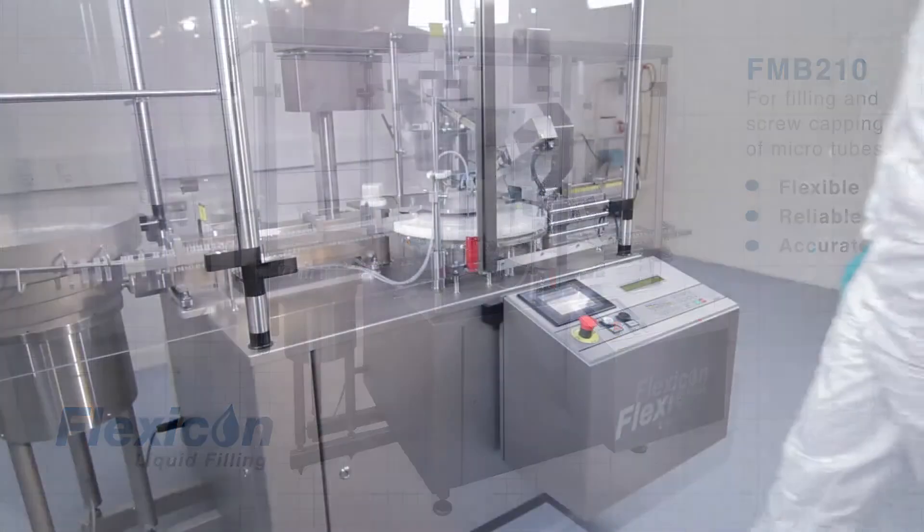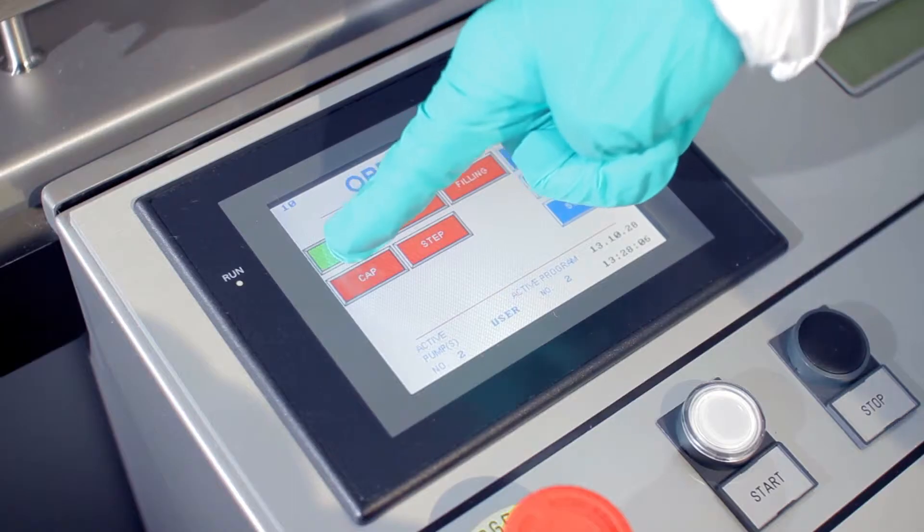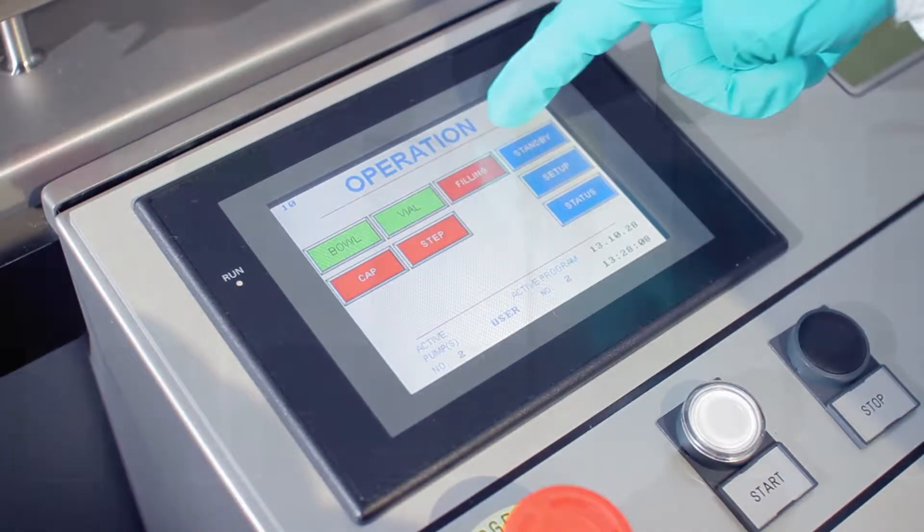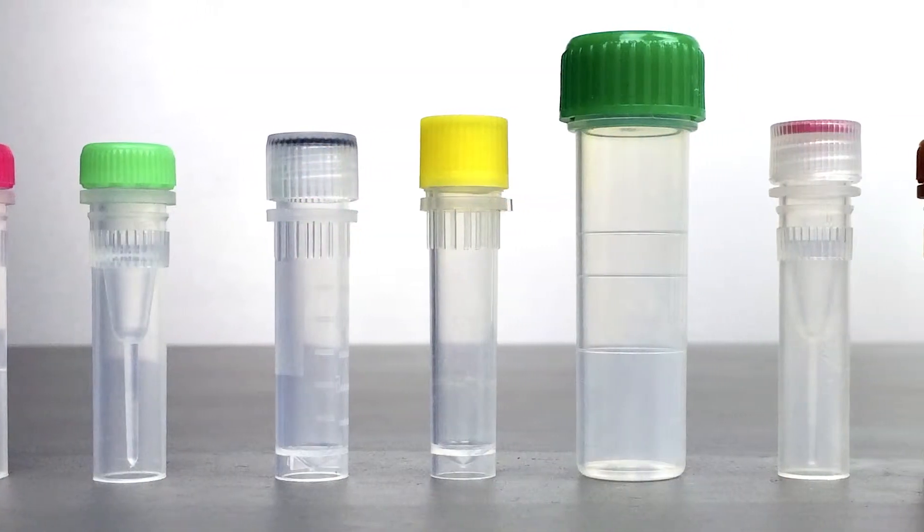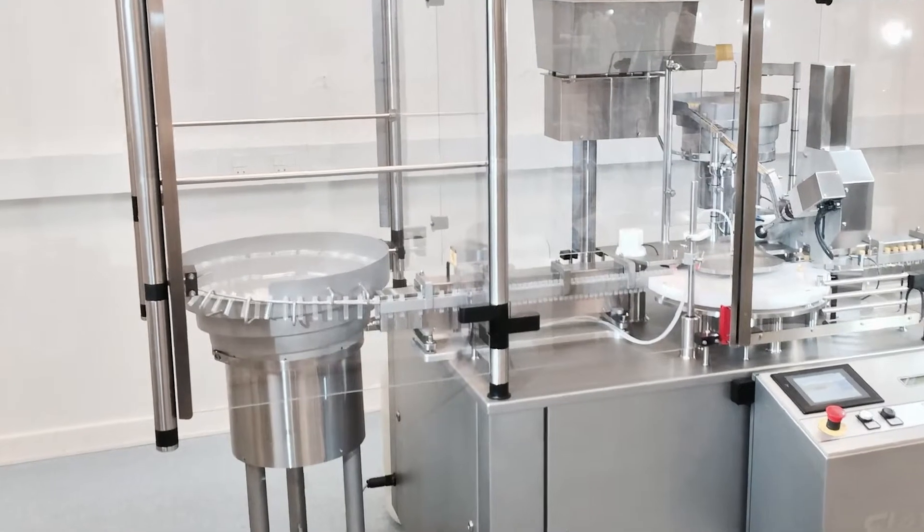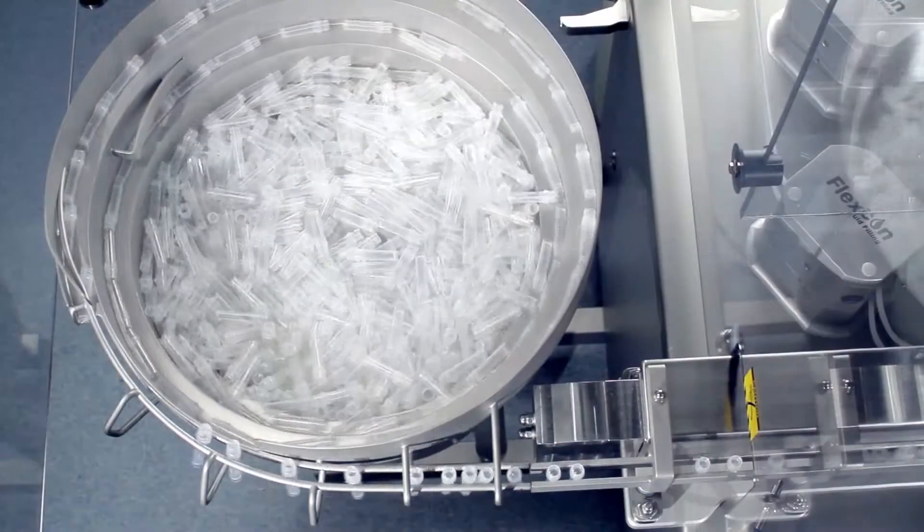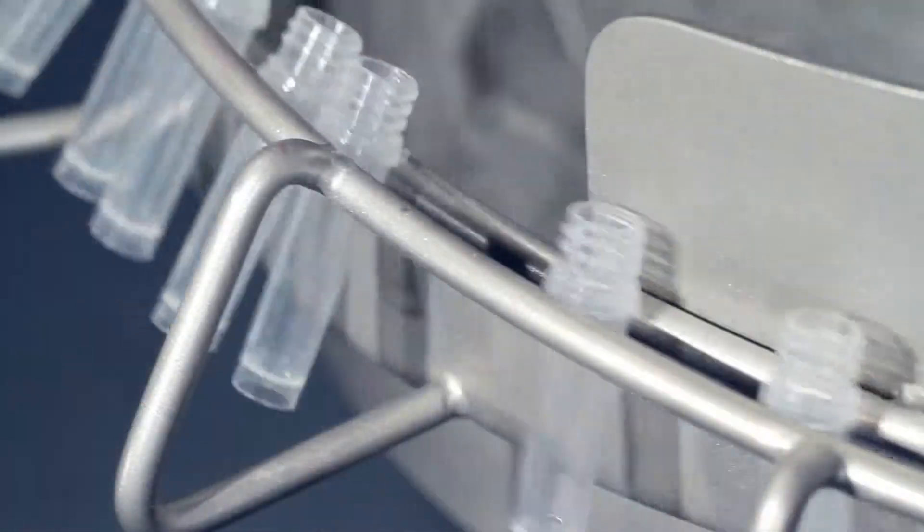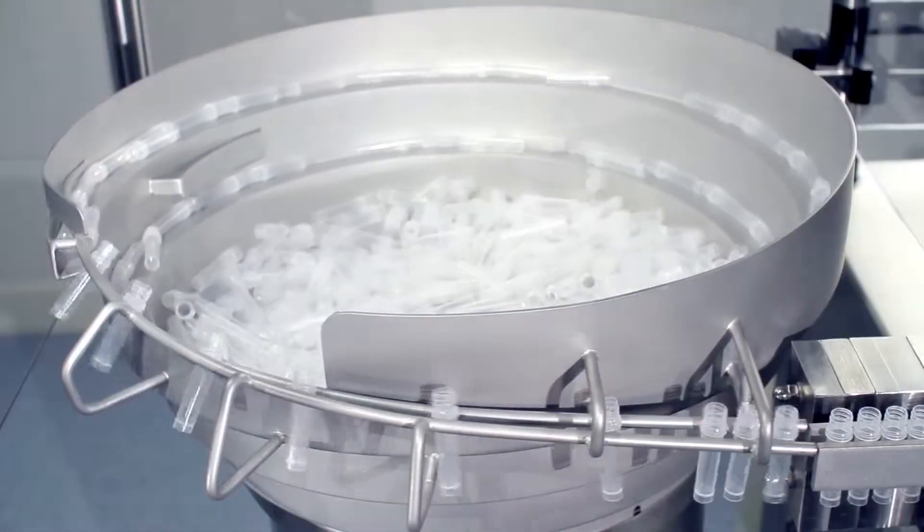Flexicon's FMB210 is a family of fully automatic filling and capping machines capable of working with many different liquids, fill volumes and a range of containers. One version of the FMB210 is ideal for aseptic filling and capping of microtubes in the biotech and diagnostic industries.